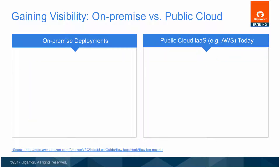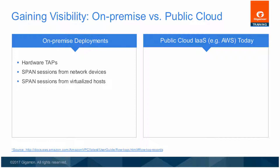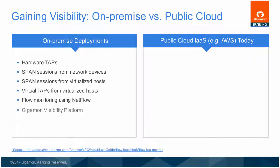Many companies not only put applications inside AWS, but also the entire back-office infrastructure. Today, on-premise deployments cover a wide range of solutions that can gain visibility into the network. Many of these solutions include hardware taps, span sessions from physical and virtualized devices, virtual taps from virtualized hosts, the Gigamon Visibility Platform and GigaSmart applications, as well as the installation of a special-purpose monitoring appliance. This differs greatly from public solutions for visibility in the public cloud.